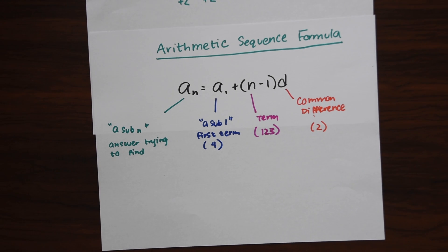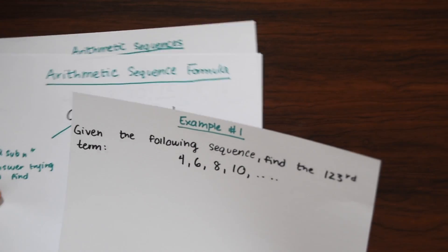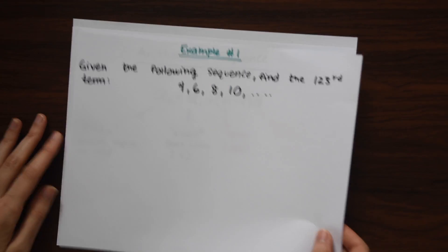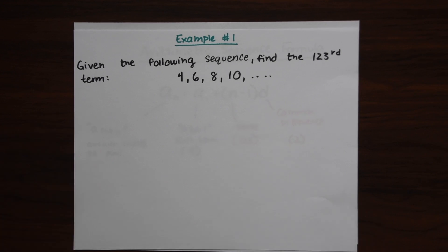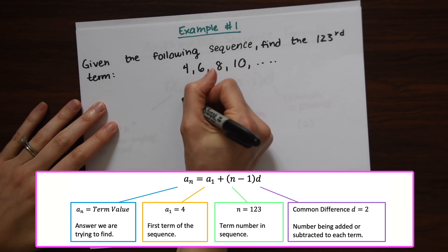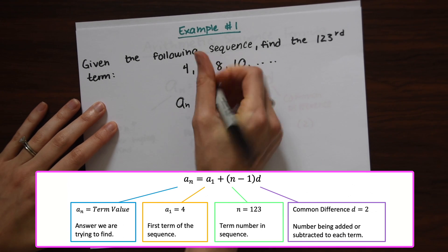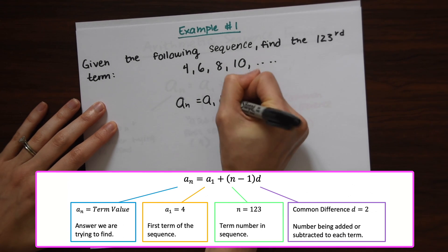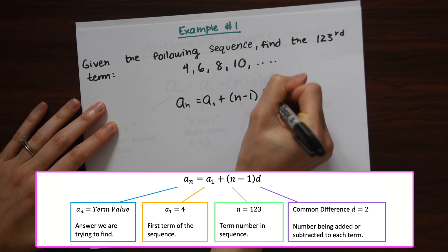So now that we know what the arithmetic sequence formula is, let's look back at our example, that sequence we were given 4, 6, 8, 10, and we want to find the 123rd term. So to do that, we're just going to fill in our formula with the values we found. So let's write out our formula again. A sub N equals A sub 1 plus N minus 1 times D.